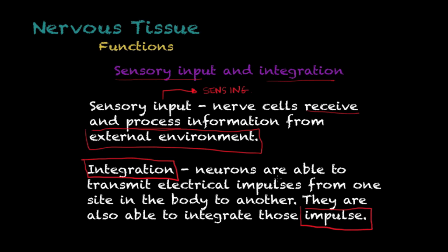Neurons are able to transmit electrical impulses from one site in the body to another. These cells are also able to integrate these impulses within their cytoplasm in a very specific way that can be discussed in more detail in other lectures. For now it is important to understand that this is one of the key functions of nervous tissue.